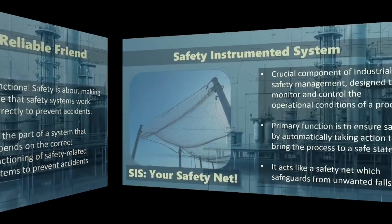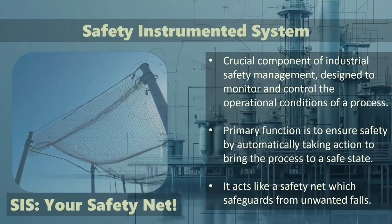Next up, safety instrumented systems. A safety instrumented system, or SIS, is a crucial component of industrial safety management, designed to monitor and control the operational conditions of a process. Its primary function is to ensure safety by automatically taking action to bring the process to a safe state when predetermined safety parameters are exceeded.